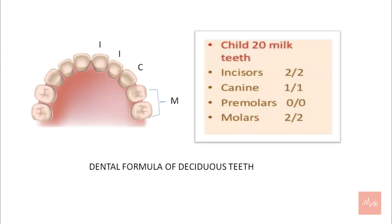Let's look into the dental formula of the deciduous teeth. A child contains 20 milk teeth. Now let's consider this photo which resembles the upper jaw. This half portion has two incisors, one canine and two molars. So one jaw contains 10 teeth and both the jaws together contain 20 teeth.